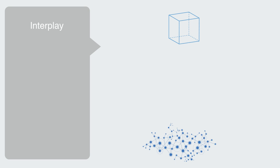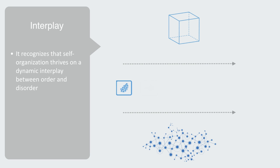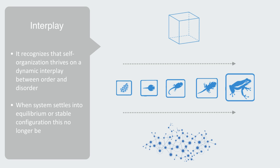Whether we use the more scientific terminology of a system being far from equilibrium or the more catchy term of 'edge of chaos,' this new vocabulary has built into it a recognition that self-organization, evolution, and novelty thrive on a dynamic interplay between order and disorder. This is because it is only when there is a sufficiently high level of entropy and disorder within the system that a weak fluctuation can be amplified into a new pattern of order. But when the system settles into an equilibrium or stable configuration, this no longer becomes possible.